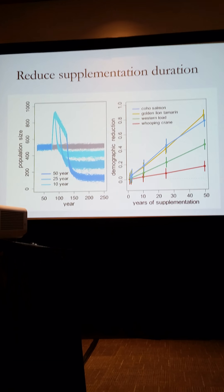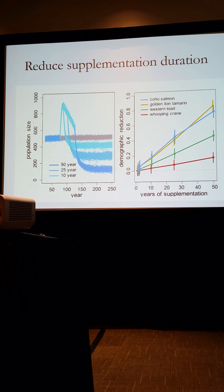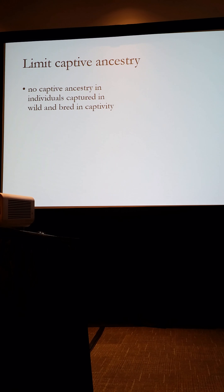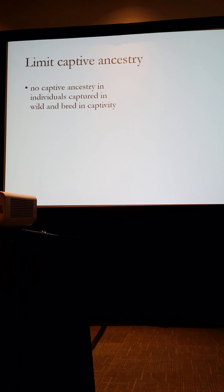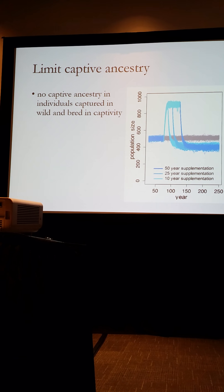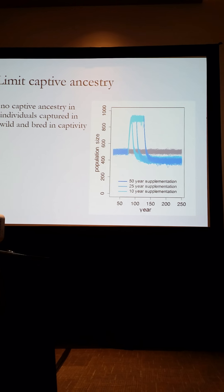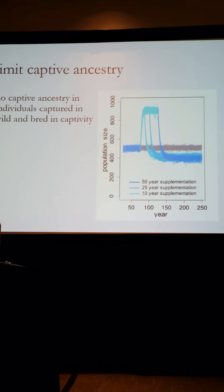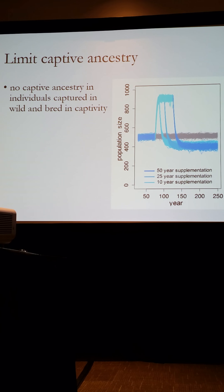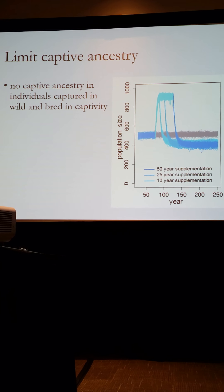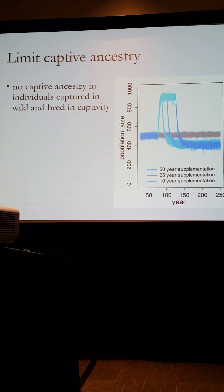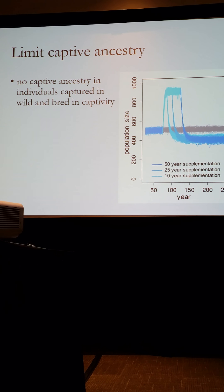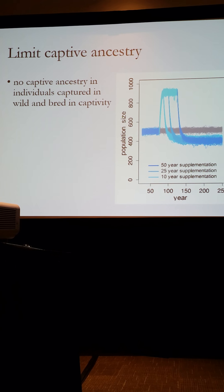The trouble is that I'm not sure supplementing for one, two, or even ten years would hit any of the goals of a species recovery plan. So we also considered the effects of removing or limiting captive ancestry within the individuals allowed to breed in captivity. When we did this, we found that it didn't matter how long we supplemented — we saw a reduced effect on population size relative to the control, much less than when we hadn't eliminated captive ancestry from the breeding program. However, one limitation would be that it would require either a pedigreed wild population or significant genetic resources to determine the captive ancestry of individuals collected prior to reproduction.